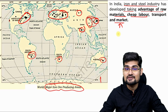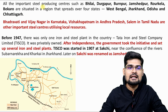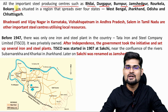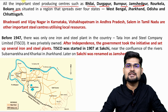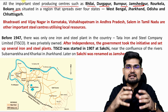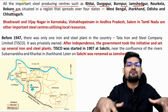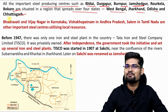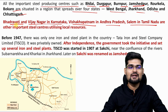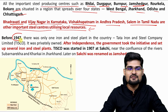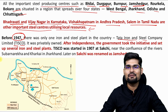All important iron and steel producing centers — for example, Bhilai, Durgapur, Burnpur, Jamshedpur, Rourkela and Bokaro — were established after independence. We had the five-year plans which were focused on the growth pole concept: if these iron and steel industries are there, they would strengthen the economy, cities would bloom and development of the region would gradually happen. They are spread over four states: West Bengal, Jharkhand, Odisha and Chhattisgarh. Bhadravati in Vijayanagar in Karnataka, Visakhapatnam in Andhra Pradesh and Salem in Tamil Nadu are other important steel centers utilizing local resources.